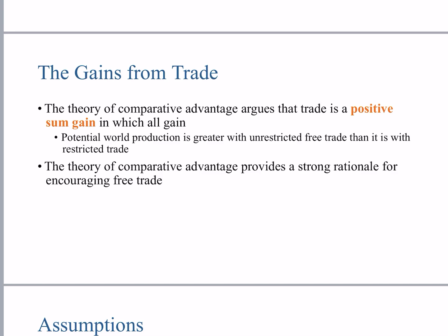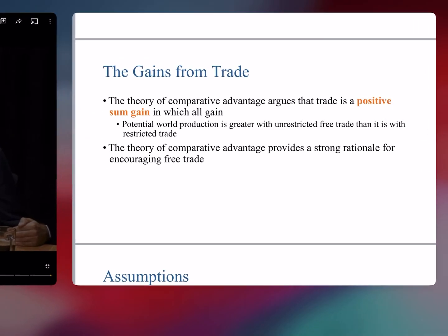Before classical economists Adam Smith and David Ricardo, there were mercantilists who said trade is a zero sum game — one country's positive is cancelled by another country's negative, so the total is zero, meaning the exporting country benefits while the importing country loses. But economists have proved that trade is not a zero sum game but a positive sum game in which all countries gain. Potential world production is greater with unrestricted free trade than with restricted trade, providing a strong rationale for encouraging free trade.